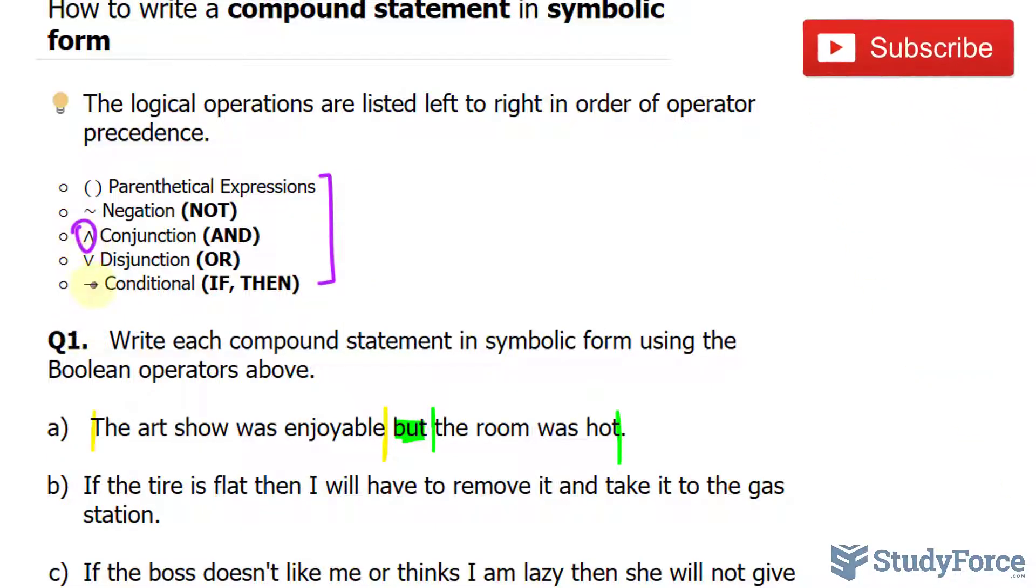So we'll use this operation, this symbol, to connect these two. I'll call this first statement P and this statement Q. So I can write this as P but Q, or P and Q. That's the answer to A.